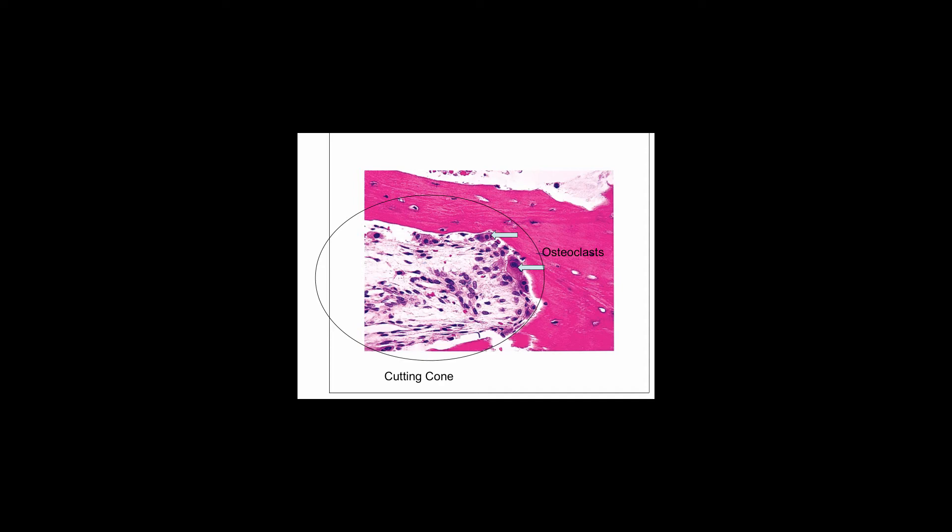The next slide shows a bone remodeling unit with the metabolically active osteoclasts at the advancing edge of this cutting cone. The cutting cone or canal that the osteoclasts generate is filled with blood vessels, small nerves, and mesenchymal cells, including stem cells enmeshed in loose connective tissue. The osteoclasts are derived from hematopoietic stem cells and are concentrated at the leading edge of the cavity.